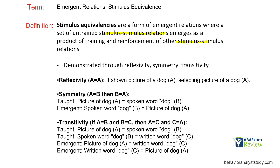Let's look at reflexivity: A equals A. If I show you a picture of a dog and you select a picture of a dog, that's A equals A — a stimulus-stimulus relationship. Now let's think about symmetry: A equals B. I teach you picture of dog A equals spoken word dog B. Due to that relationship, this emerges: spoken word dog matches picture of dog. The idea has just flipped — that simple.